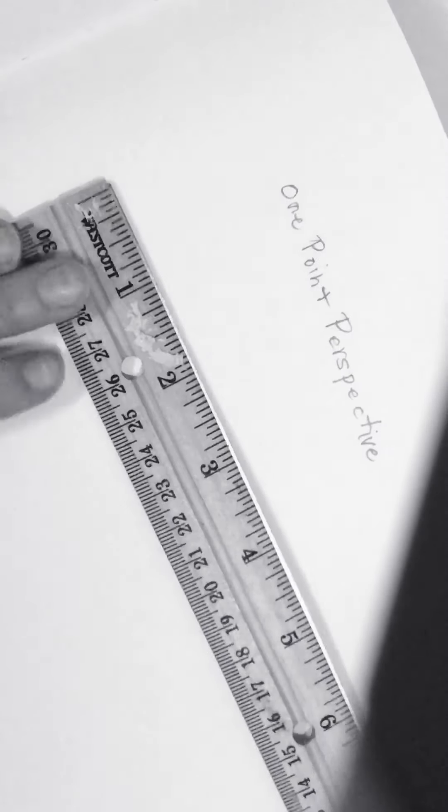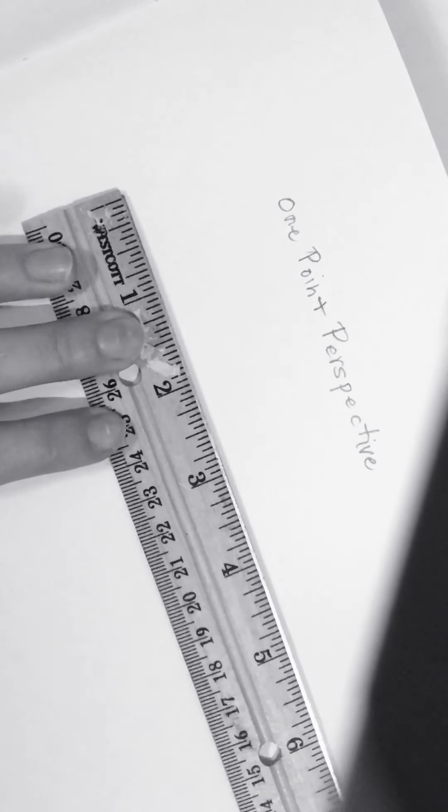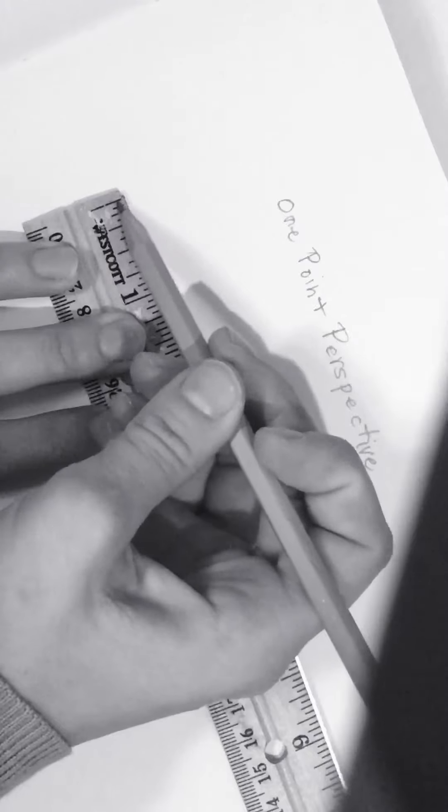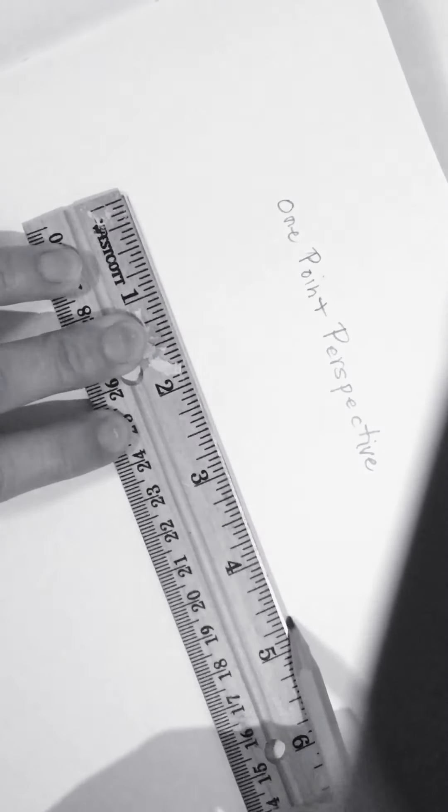So in class, we used our ruler to make our horizon line. And when you draw this, just do it light.